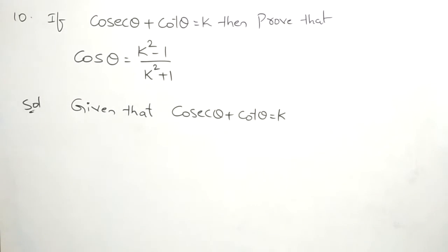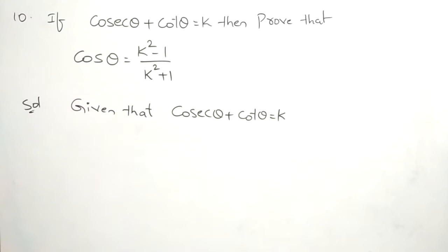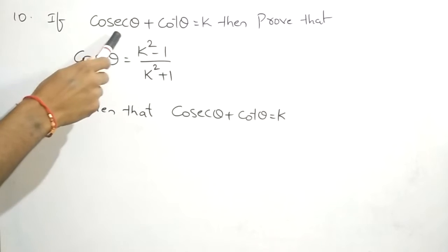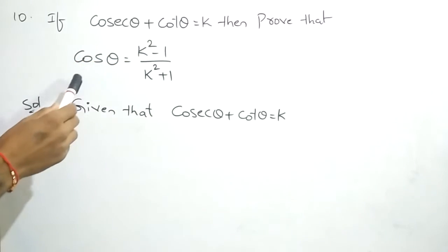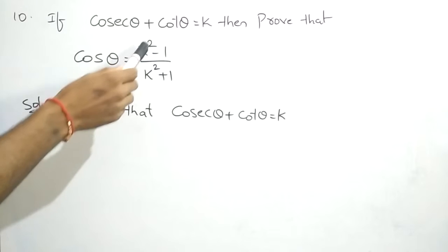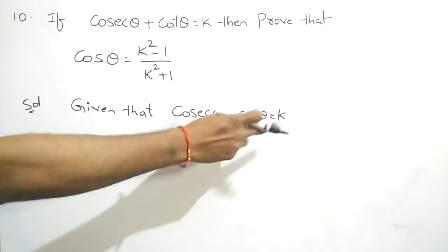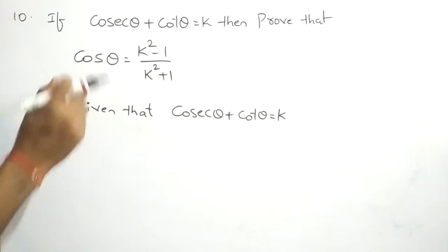Hi friends, let's continue our studies. We have completed nearly nine problems in exercise 11.4. Now we are going to solve the 10th problem. The problem is: if cosθ + cotθ equals k, then we have to prove that cosθ equals (k² - 1) / (k² + 1). Solution: given that cosθ + cotθ = k.